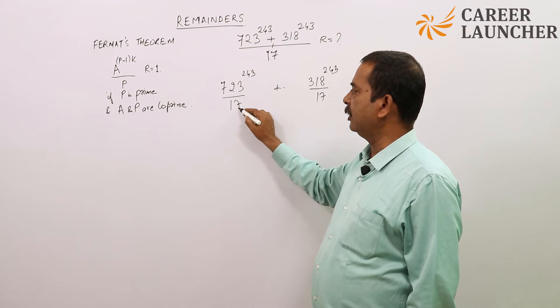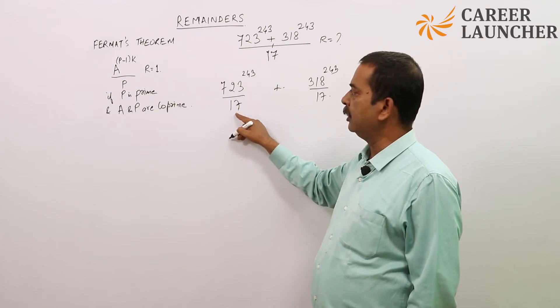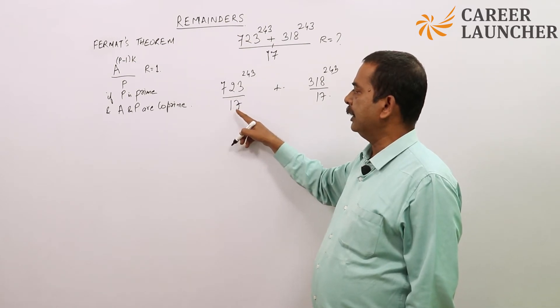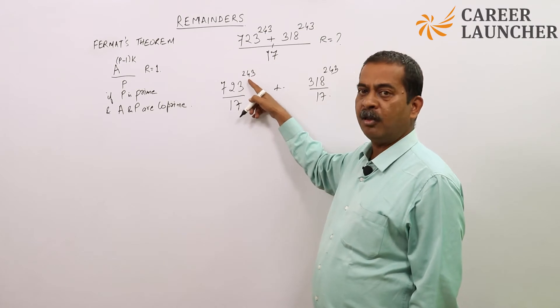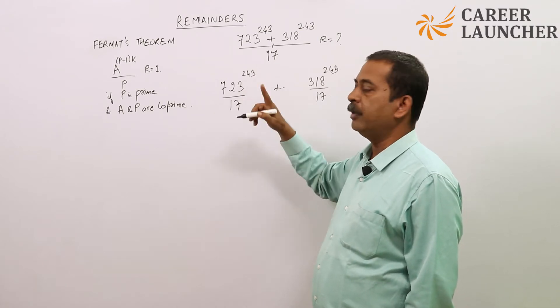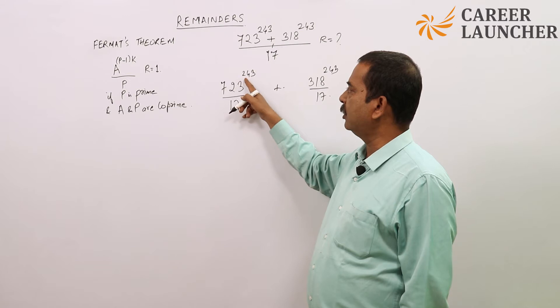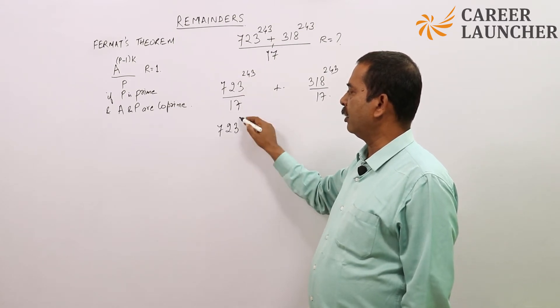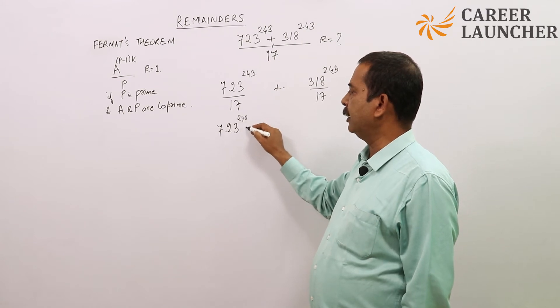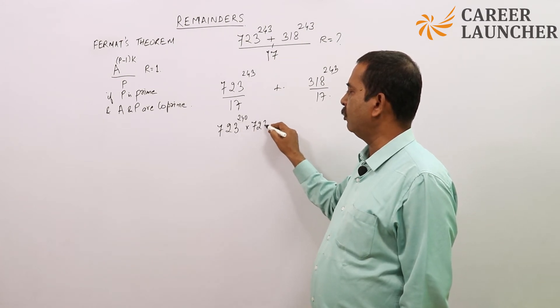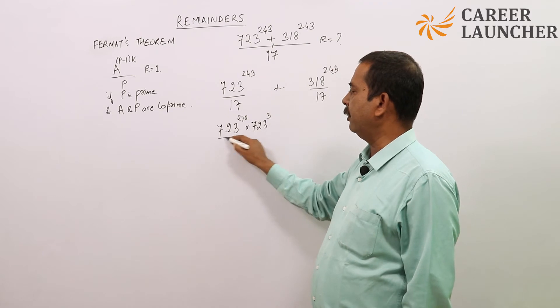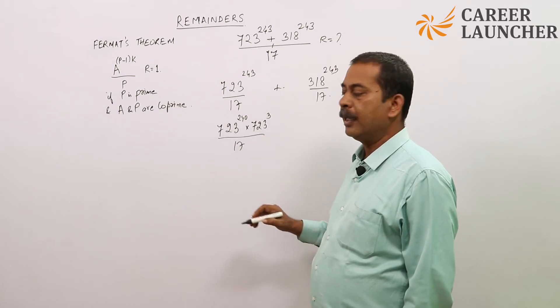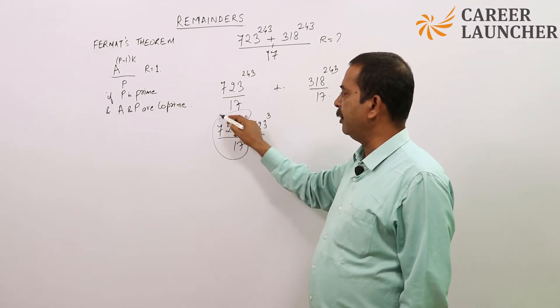This part says if 17 is a prime number and these two are co-prime, then the 16th power or multiple of 16 power will always give me remainder 1. If I see this is 240 plus 3 which is a multiple of 16, I can write this as 723 to the power 240 times 723 to the power 3 divided by 17.